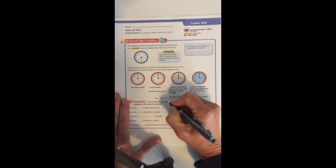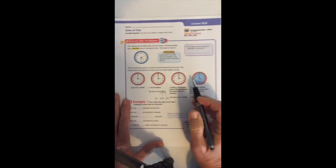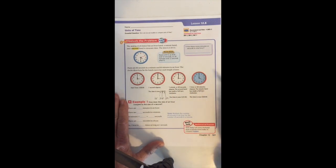So we know that one minute is 60 seconds and one hour is 60 minutes.